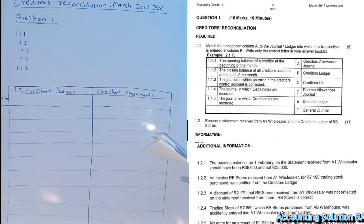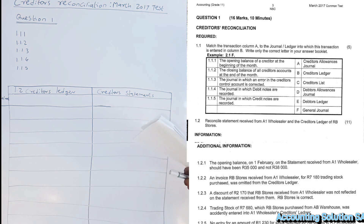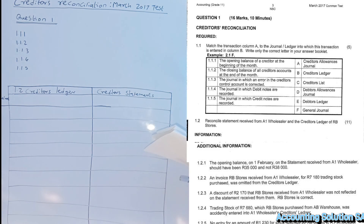On the other side we have: creditors allowance journal, general journal, creditors ledger, creditors list, debtors allowance journal, debtors ledger, and general ledger. We have to choose the correct one for each question.